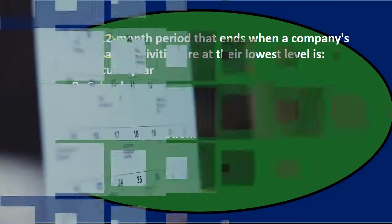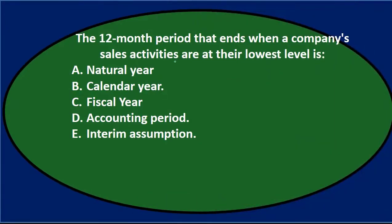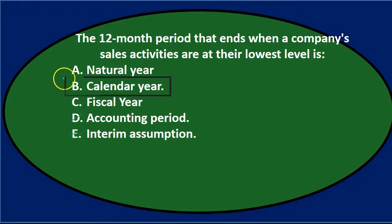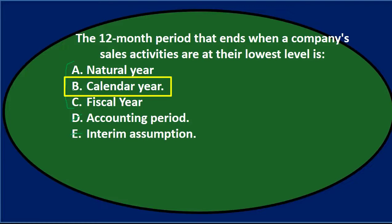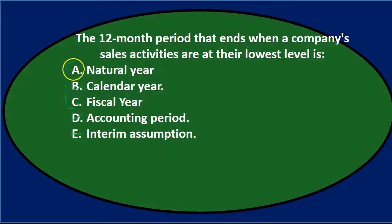If we think about this, we're looking for that 12-month time period that ends when a company's sales activities are at their lowest. We're going to think that looks like some type of year. We might eliminate interim assumption — that doesn't look like it applies. Accounting period also doesn't look like it applies here. That leaves us with fiscal year, calendar year, and natural year.